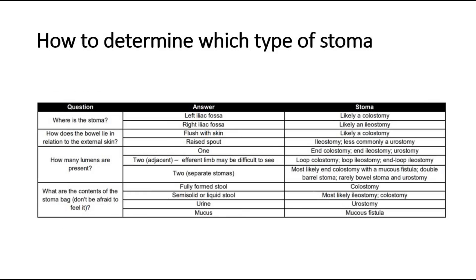How do we determine the type of stoma when we see it? Consider the location — left iliac fossa is likely a colostomy, right iliac fossa is likely an ileostomy. Consider how the bowel lies in relation to external skin — colostomy is usually flush with skin, while ileostomy has a raised spout. Consider how many lumens are present — one lumen is end colostomy, end ileostomy, or urostomy; two adjacent lumens suggest loop colostomy or ileostomy.